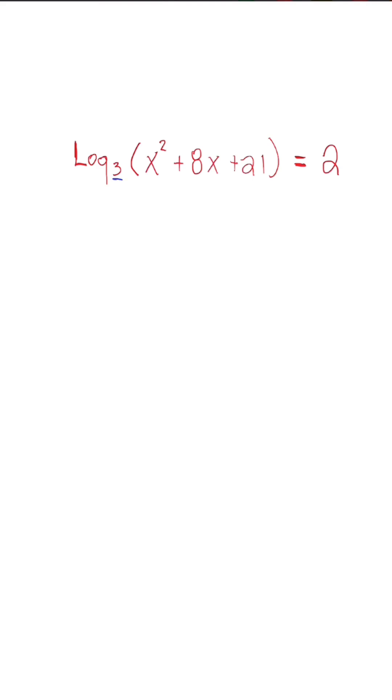So to do that, we have to understand that 3 represents the base, and 2 is our exponent. So when we rewrite this, we have x squared plus 8x plus 21 is equal to our base squared.